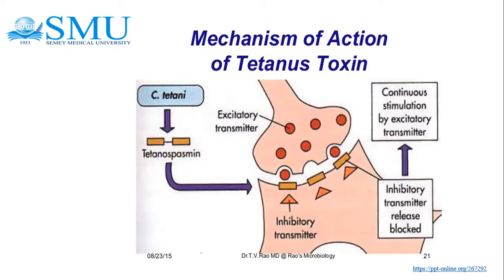Mechanism of action of tetanus toxin: tetanus toxin binds to receptor polysialogangliosides present on motor nerve terminals, resulting in toxin internalization. Following internalization, the toxin is transported in a retrograde manner to the GABA (gamma-aminobutyric acid) and glycine-producing inhibitory neuron terminals. The toxin prevents the presynaptic release of inhibitory neurotransmitters glycine and GABA, which leads to spastic muscle contraction.